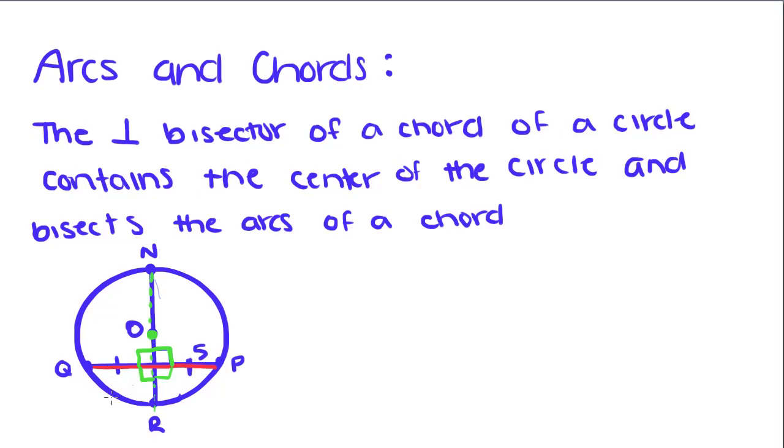That means that chord QR is congruent to RP. Chord QN is congruent to PN. And since it's a bisector, it means it bisects this chord QR into two equal parts.